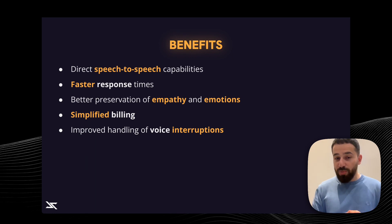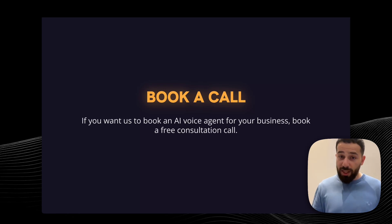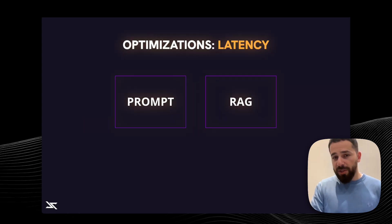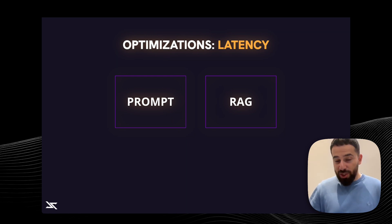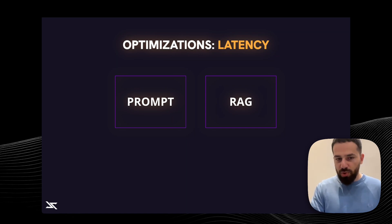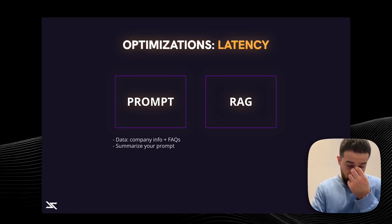I'm going to explain some optimizations we did to improve latency and interruption handling even more. The first implementation was around latency — we wanted latency to be faster. OpenAI by default has pretty good latency, but once you start adding a lot of business information, the AI becomes slower because it has more data to process. There are two approaches: you can add all the data in the prompt if it's not too much, or if you have a lot of data, you can use a RAG architecture. We prefer the prompt because the prompt data is directly available and therefore faster.